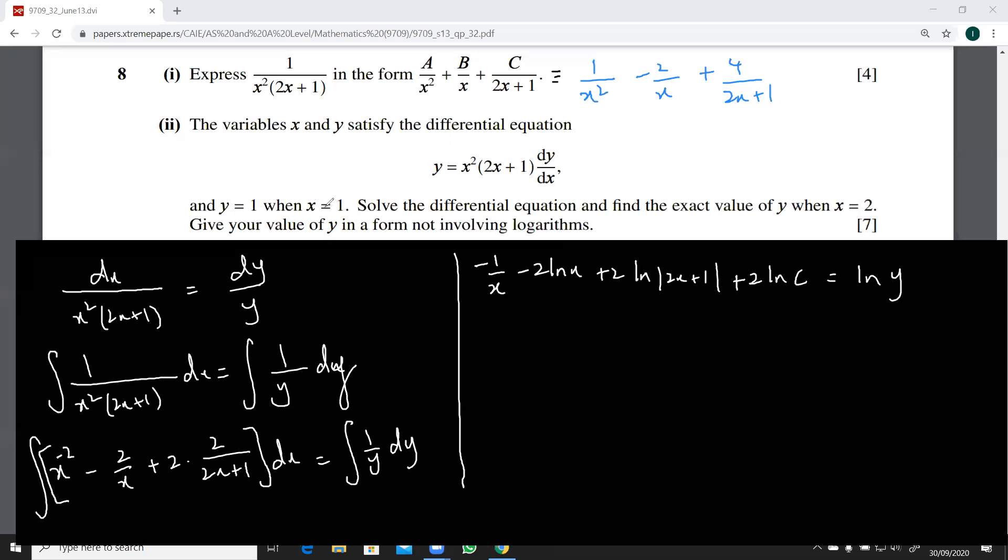So we have y equal to 1 and x equal to 1. Let's put that first of all. This is going to give me minus 1, this will be 0, this will be 2 ln 3, and this is 2 ln C, and this is going to be equal to 0. So 2 ln C is 1 minus 2 ln 3.